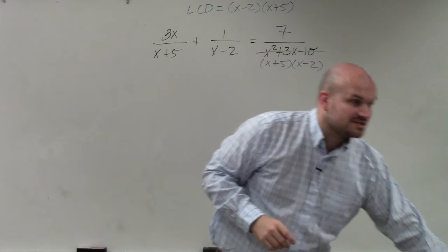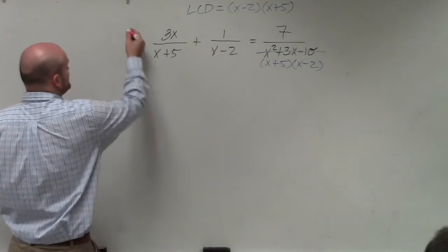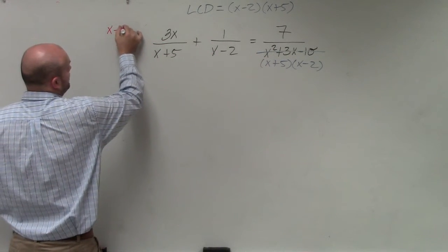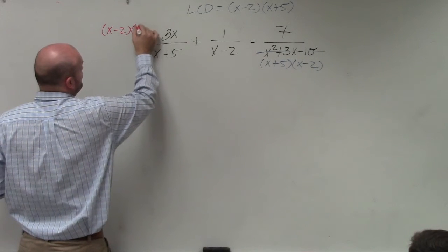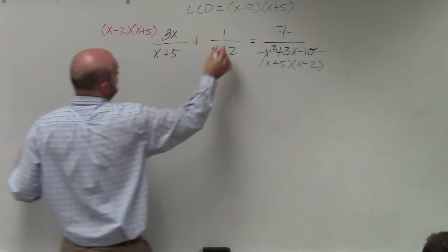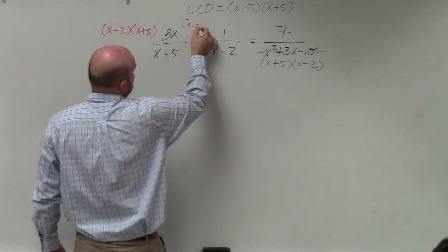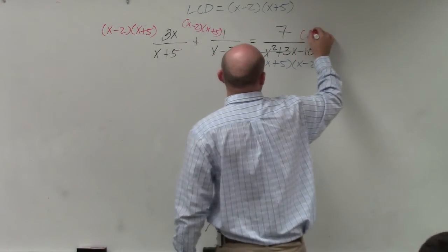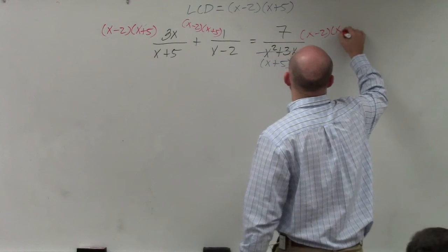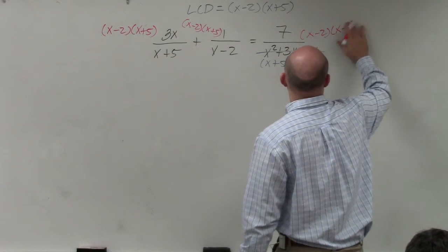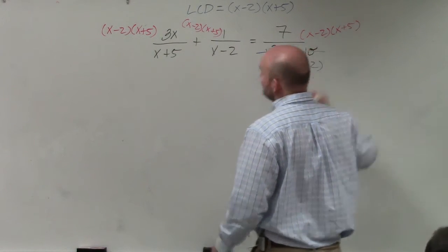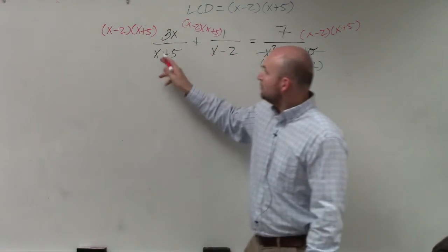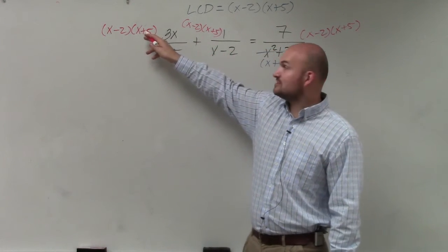Then we now take our LCD, and we multiply it times every single expression. What that's going to do is that's going to eliminate our denominators. The reason why it eliminates our denominators is because of the division property. And again, remember the division property states, when you have a number, a term, an expression divided by itself, it divides to 1.